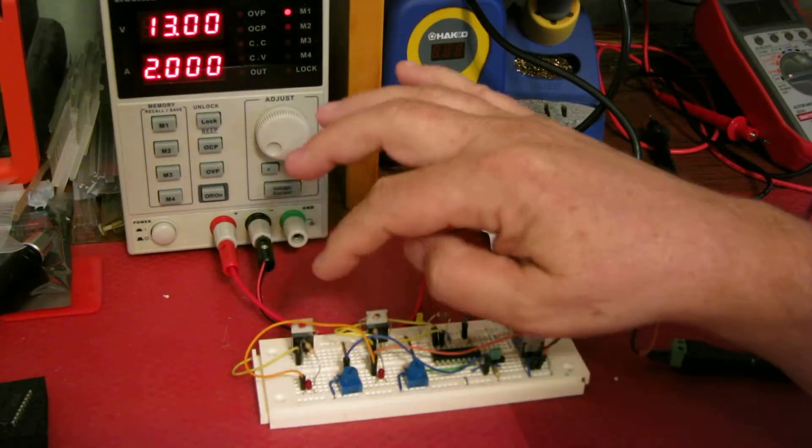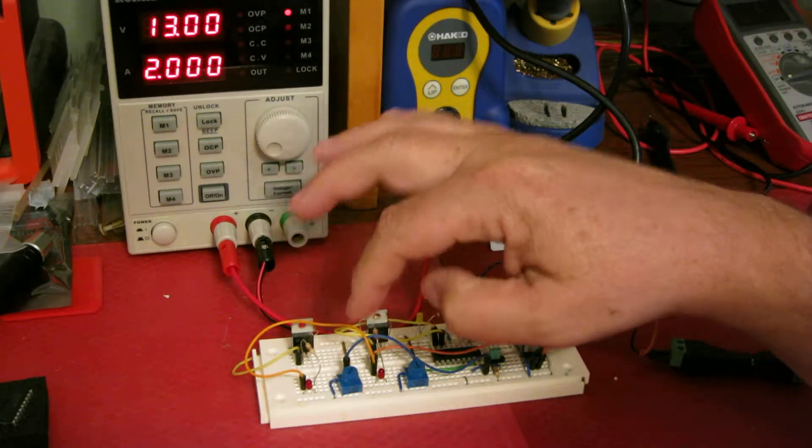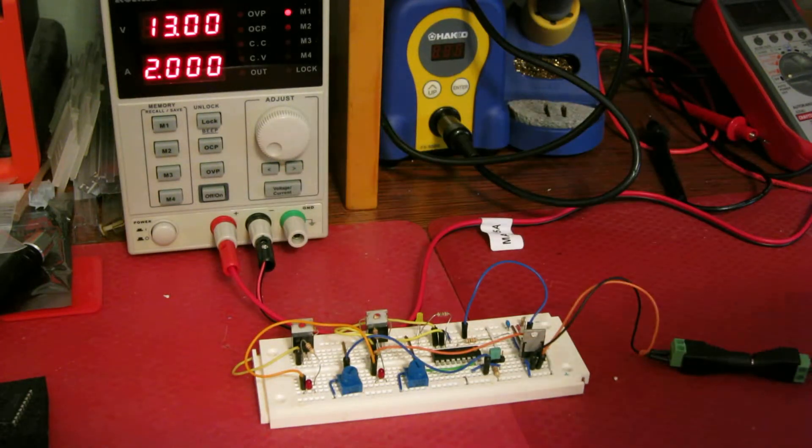These two little LEDs here will show when the power's on, and then we have a couple of pots, one for each MOSFET, that'll control how long the duty cycle is. We have about a five-second duty cycle.